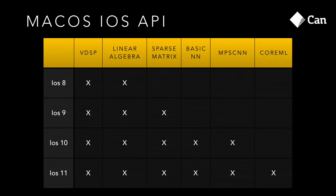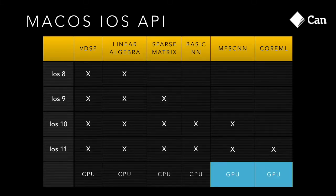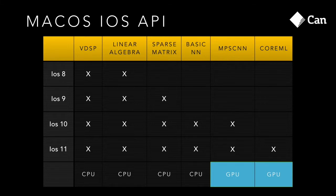This year they introduced CoreML. What's also fascinating is that up until last year all of these routines would work on CPU, but last year and this year they introduced routines that work on GPU. I couldn't find the exact computational performance of the A10 Fusion processor, but I believe that GPU is already or will soon become faster than CPU on our mobile phones, which means for deep learning we should be using GPUs.